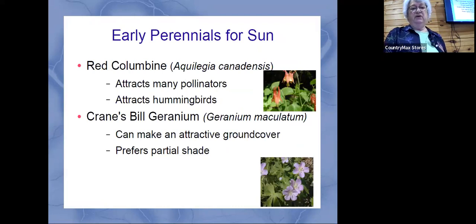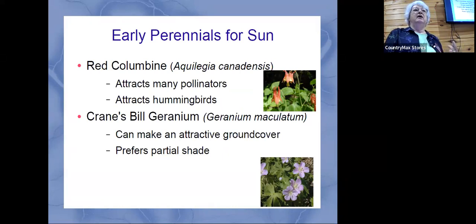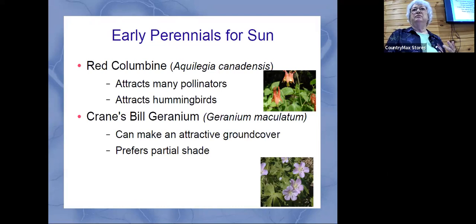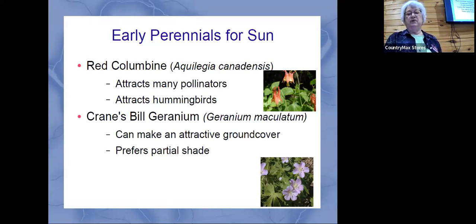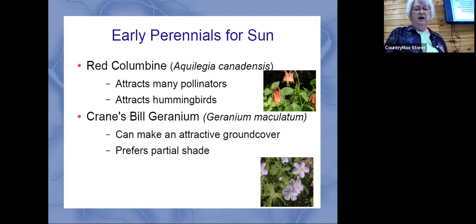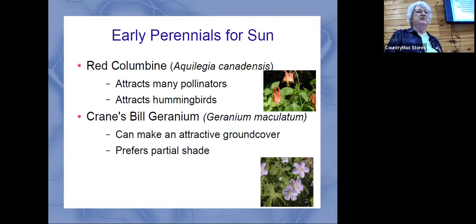Now we're getting into perennial flowers. They're divided by when they flower: the early period is from after the first frost up to mid-June; mid-flowering is from mid-June to mid-August; and late-flowering is from mid-August through the first freeze. Columbine is one you can do — they bloom in spring and aren't too hard to grow. These sun perennials are going to be divided up by time and by sun or shade — this is where you really start selecting your plants by your garden.